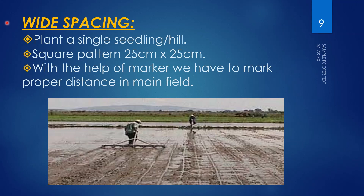The next principle is wide spacing — plant a single seedling per hill. A hill refers to the point where we plant a single seedling. Use a square pattern of 25 centimeters by 25 centimeters, plant-to-plant and row-to-row. The farmer uses a marker to mark the proper distance in the main field.